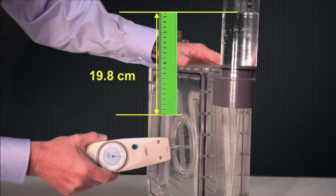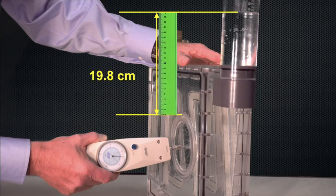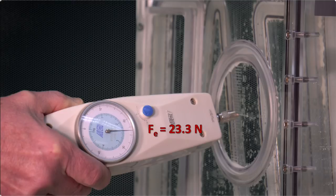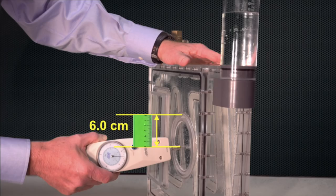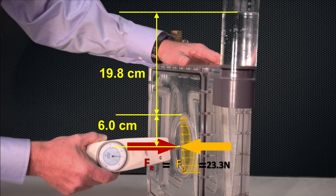In this experiment, the free surface of the water is 19.8 cm above the top of the circular panel. The magnitude of the external force, Fe, is 23.3 N, and it must be applied 6 cm below the top of the panel in order to balance the equivalent force, Fp, from the internal pressure.